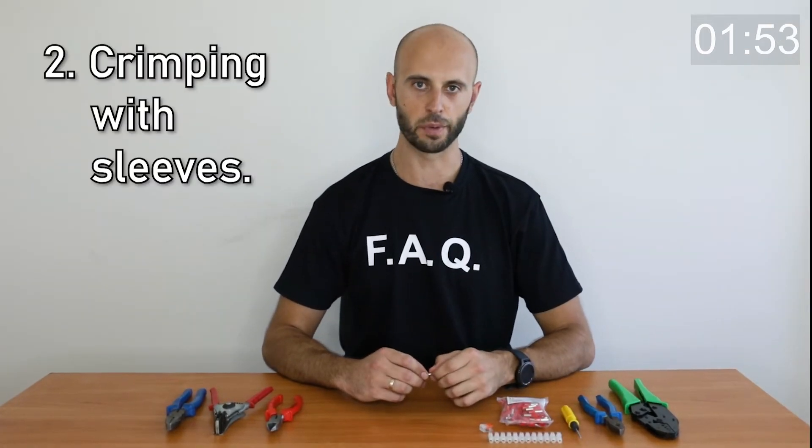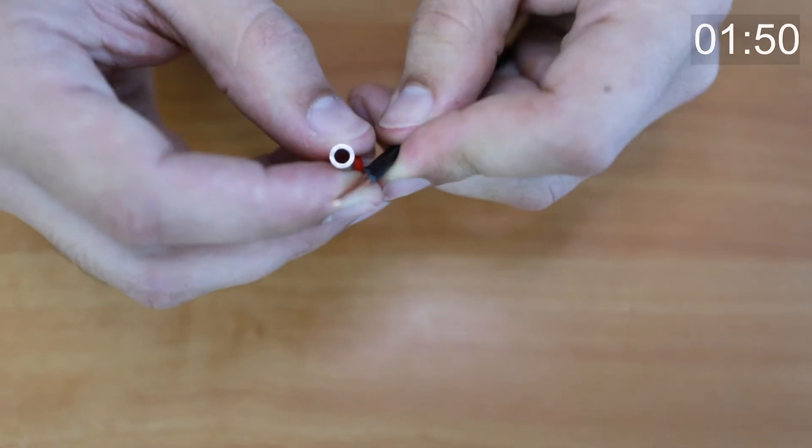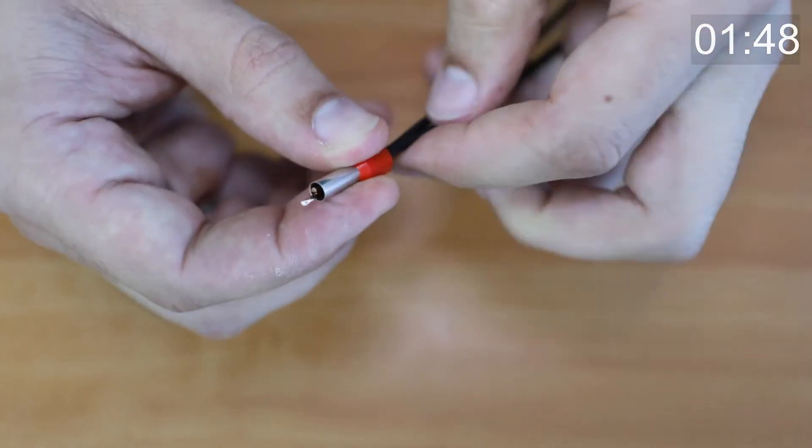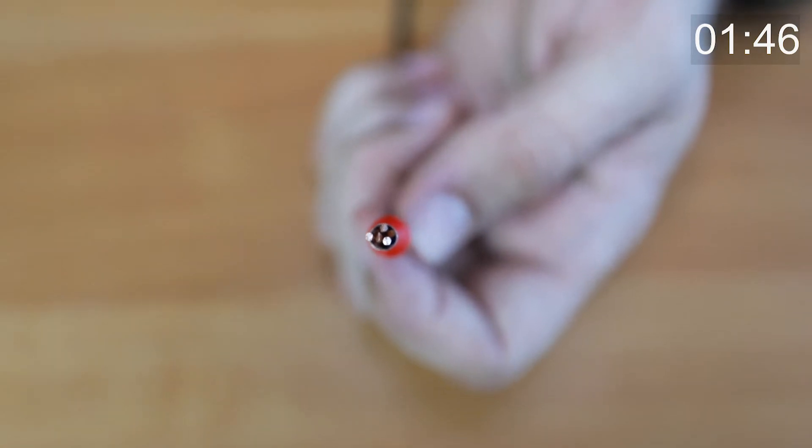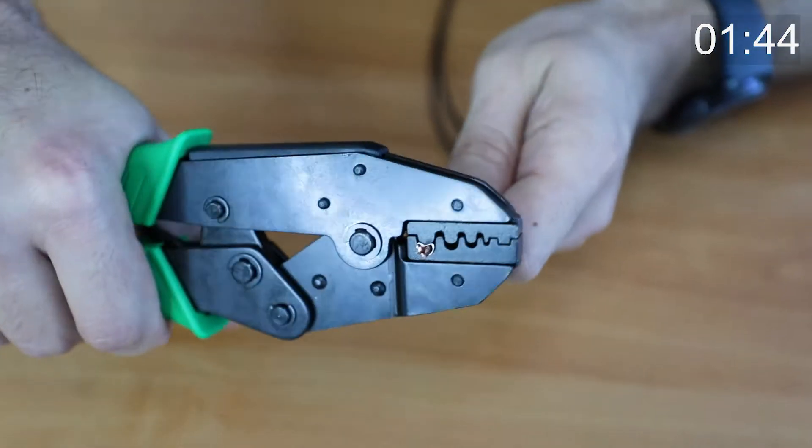One of the safest ways is crimping with sleeves. Select a sleeve for the total cross section to connect the wires. Put it on, tightly fill the remaining space with pieces of wire, and clamp with a special crimping tool.